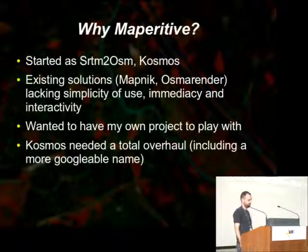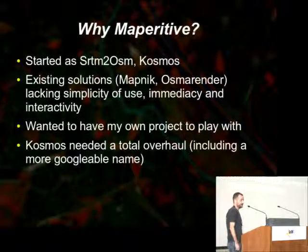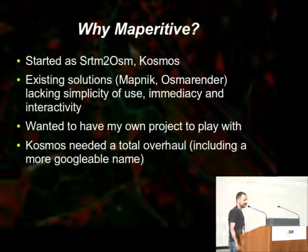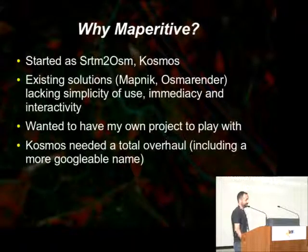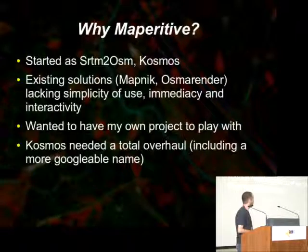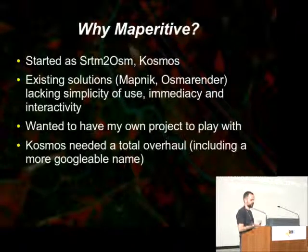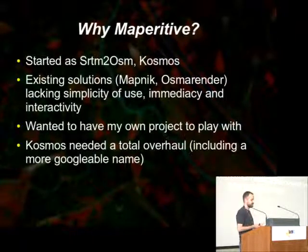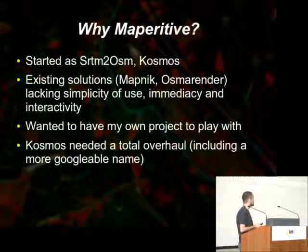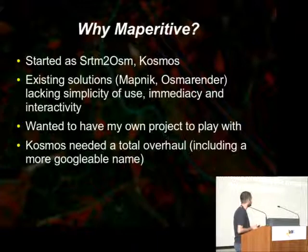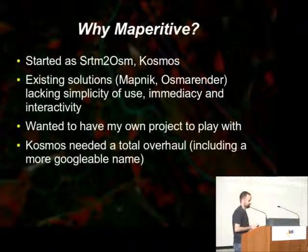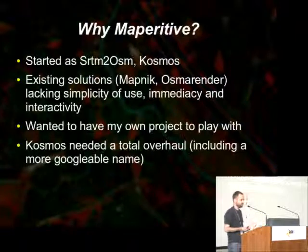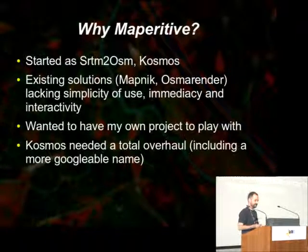Why did I start the Cosmos project two or three years ago? Existing solutions for rendering maps like Mapnik or Osmerender were, as far as I'm concerned, lacking in simplicity of use. And they lacked the ability to take an OpenStreetMap XML file, edit it in JOSM, and immediately see the rendering results without any complex installation. I also wanted an application which interactively displays the map and where I can change the rules and render a different map.